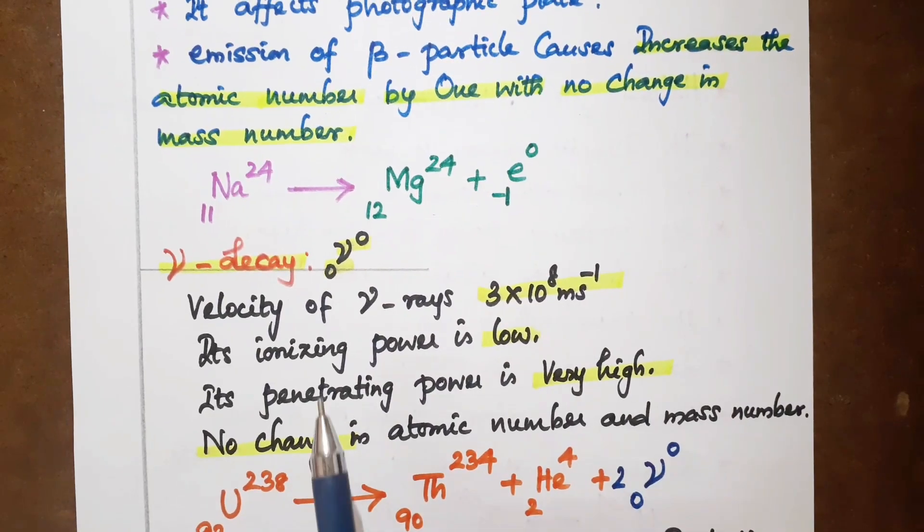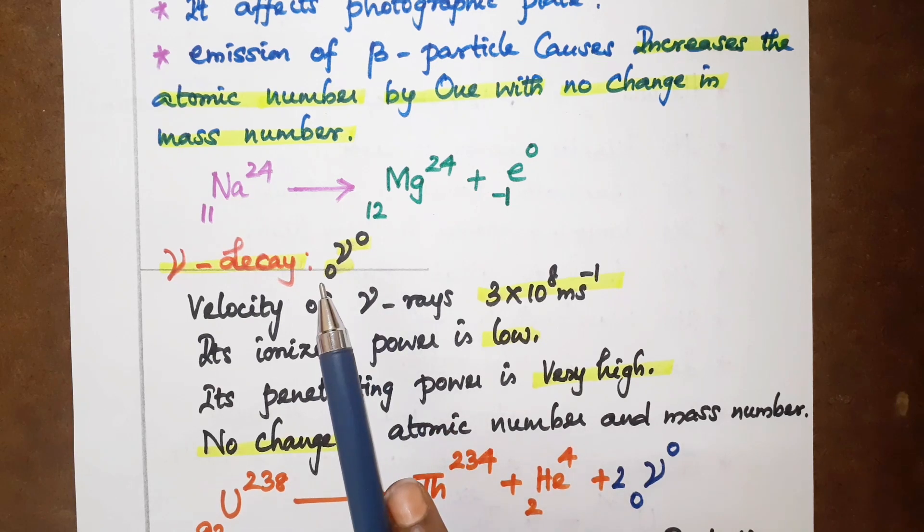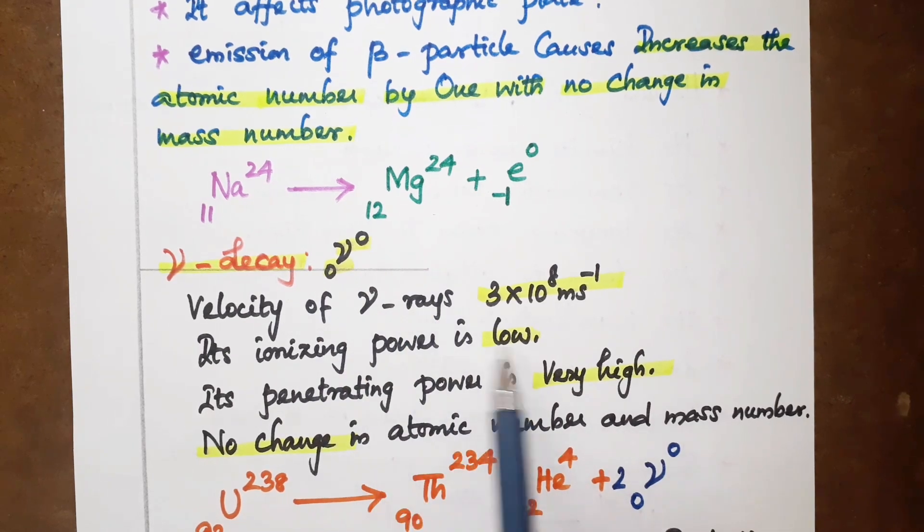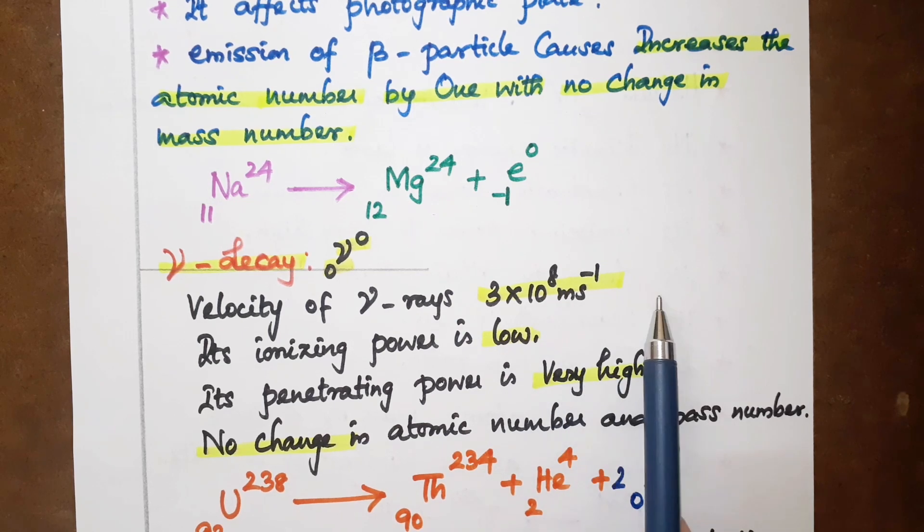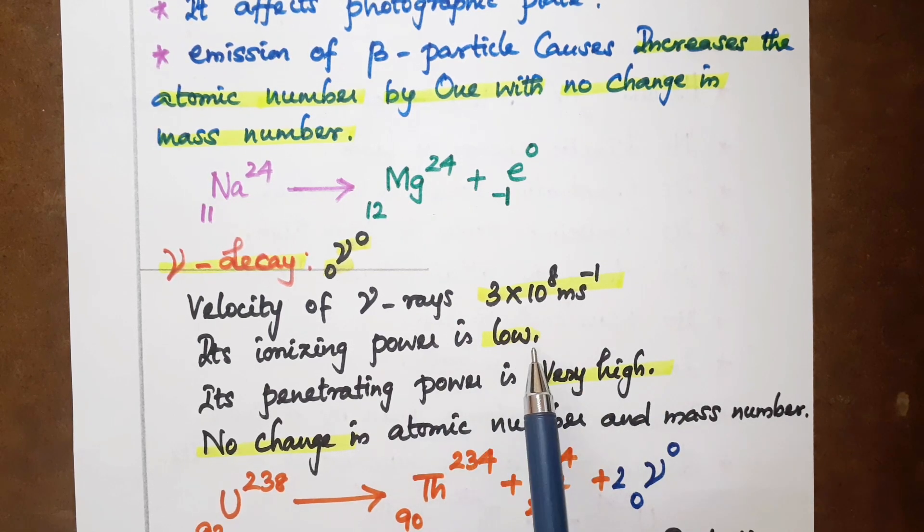Gamma decay, gamma rays. Gamma is the symbol with mass number and atomic number zero. Velocity is 3x10^8 meters per second. Ionizing power is low. Penetrating power is very high. No change in atomic number and mass number.